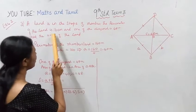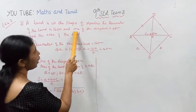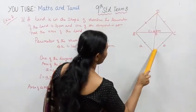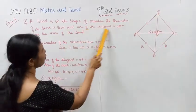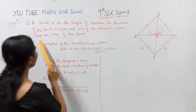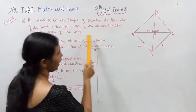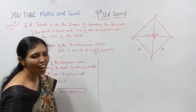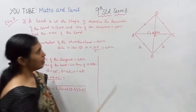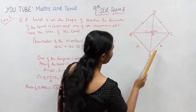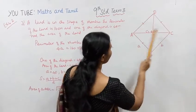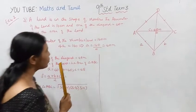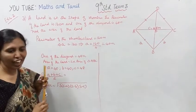The perimeter of the land is 160 meters and one of the diagonals is 48 meters. Find the area of the land. Let ABCD be the rhombus. The area of the land, let me draw ABCD. Triangle ABC.